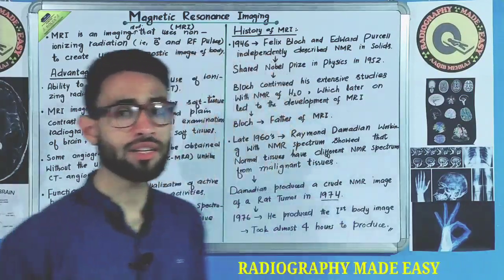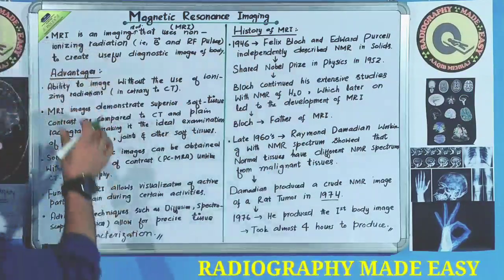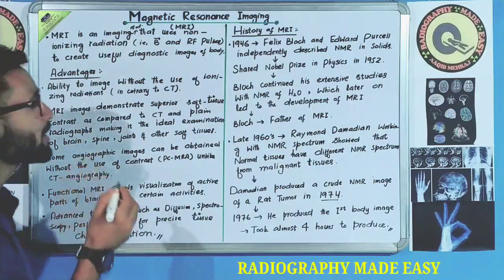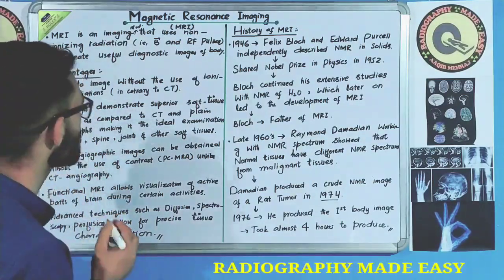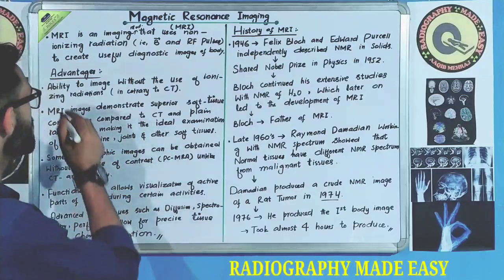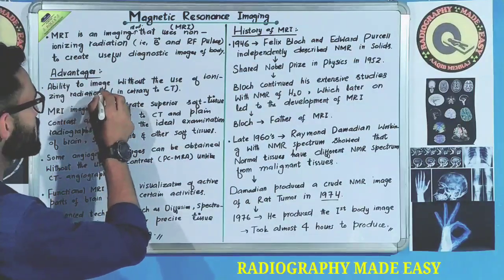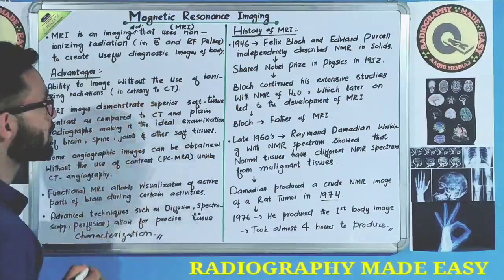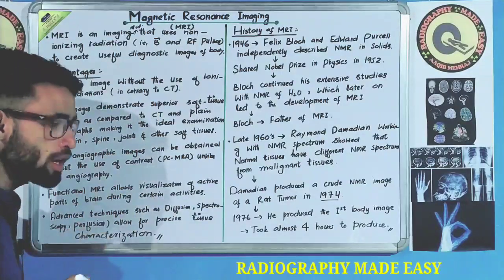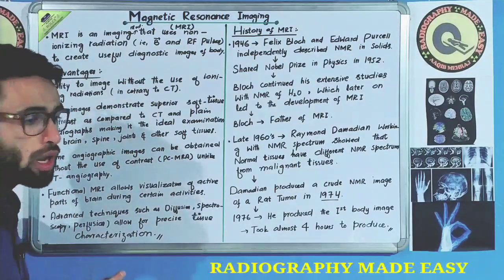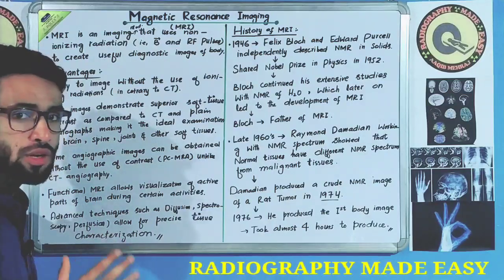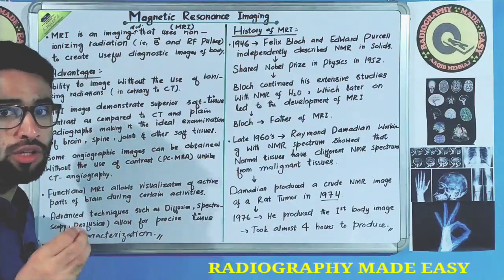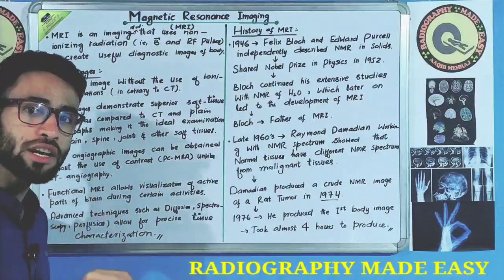Now let us see some advantages of magnetic resonance imaging. The first advantage is that it has the ability to image without the use of ionizing radiation. In contrast to CT, MRI is an imaging modality which does not use ionizing radiation.